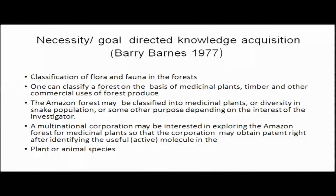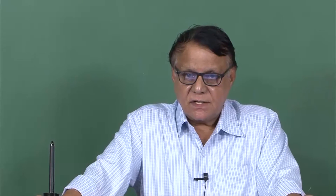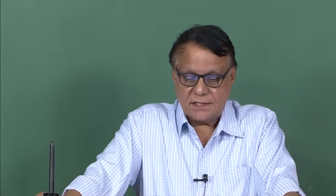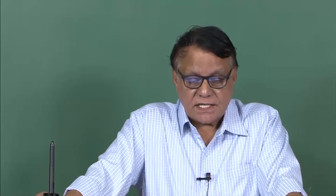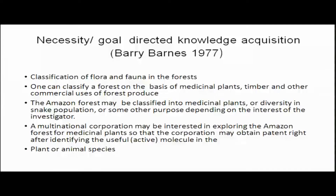Barnes strongly argues that our interests and goals direct our knowledge acquisition. Every culture teaches its members concepts and the application of concepts, which leads to classification of objects — for example, classification of flora and fauna in a forest. One can classify a forest on the basis of medicinal plants, timber-yielding plants, and other commercial uses. The Amazon forest may be classified into medicinal plants, snake population diversity, or some other purpose depending on the interest of the investigator. A multinational corporation may be interested in exploring the Amazon forest for medicinal plants to obtain patent rights after identifying useful active molecules in plant or animal species.